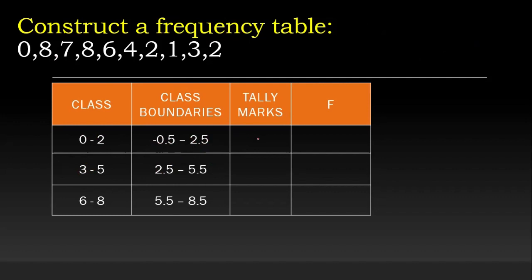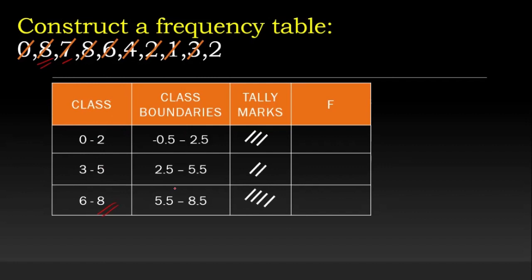Now assign tally marks: 0 belongs to the first group, so one tally mark there. 8 belongs to the third group, and so on for each number. After counting, the first class gets 4, the second class gets 2, and the third class gets 4. This is how we construct a frequency distribution table for univariate data.